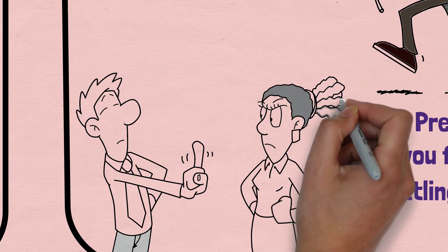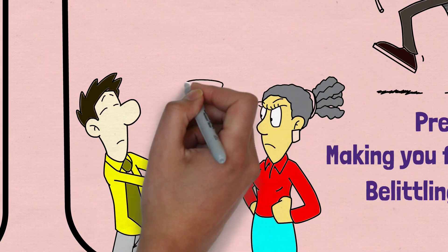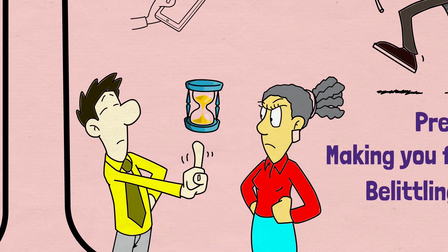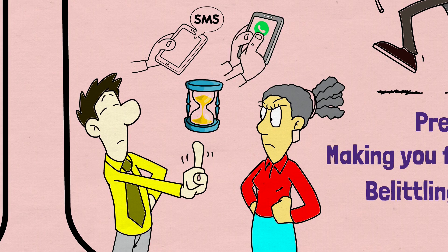Isolation can also involve your partner monopolizing your time, so you have no space to yourself. They may constantly text or call you, or make you feel guilty for wanting to spend time alone.